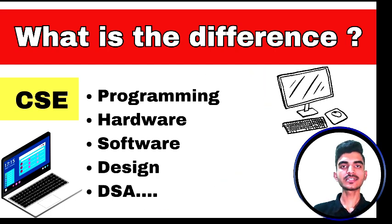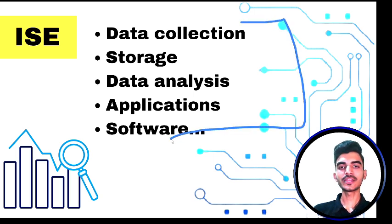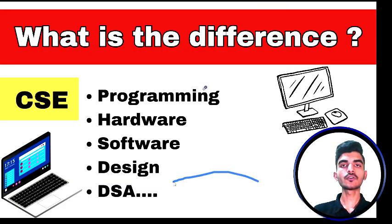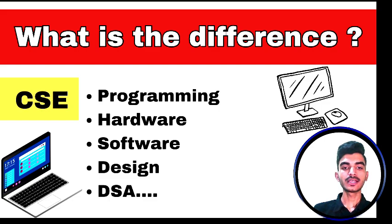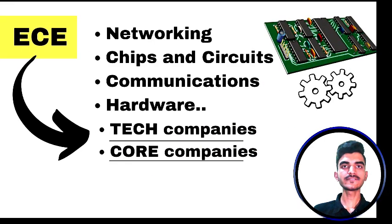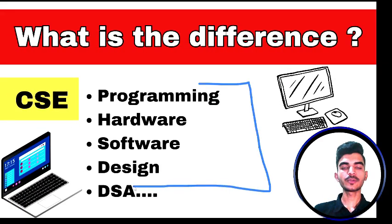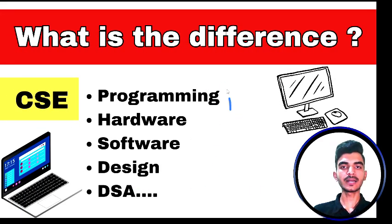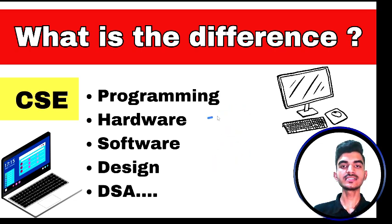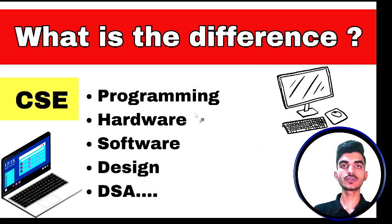You can go in any branch — it all depends on your interest. Many students also want to know about placements in the beginning itself: does EC have good placements, does information science have good placements? These questions run in your mind. But the thing is, you have to choose very carefully. It not only depends on your branch — it always depends on your skills. Mainly it depends on your talent and skills. If you are good at coding, you are anyway open to core companies but also to tech companies.